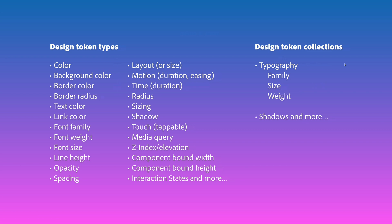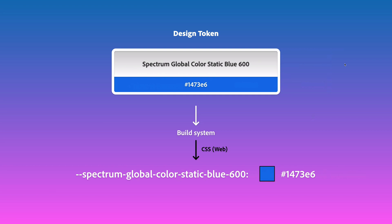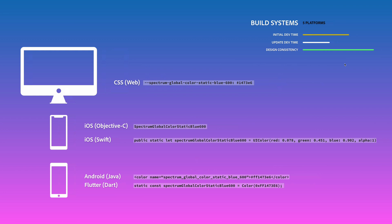So back to our color — you have your agnostic key and the hex representation as your value. There is this thing called a build system, which is code that can take agnostic tokens and, when you run it, convert that agnostic key-value information into platform-specific code. In this case we're seeing our blue token being transformed into a CSS variable to be rendered by a browser. And if you add more platforms, and the build system supports them, you can have all the different representations of your color for each platform — giving you a lot more power when you need to update things.